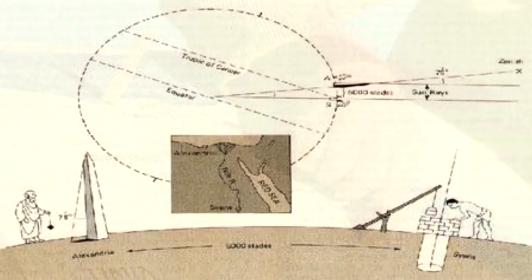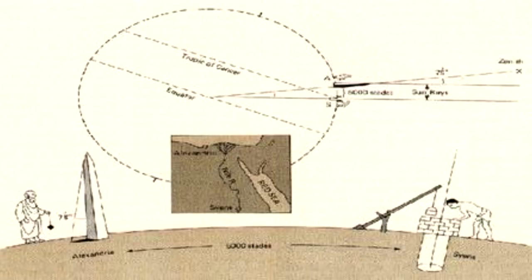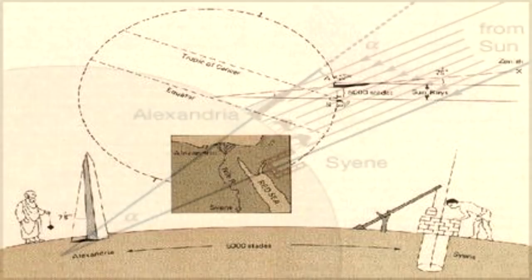The story goes that around 250 BC, a Greek mathematician and philosopher named Eratosthenes noted that at noon, during the summer solstice in Syene, the sun cast no shadow and the rays could reach straight to the bottom of his well, yet meanwhile in Alexandria a vertically standing metal rod cast a significant shadow.